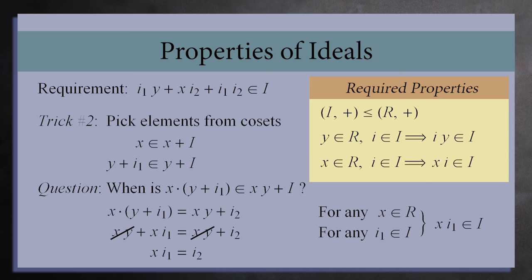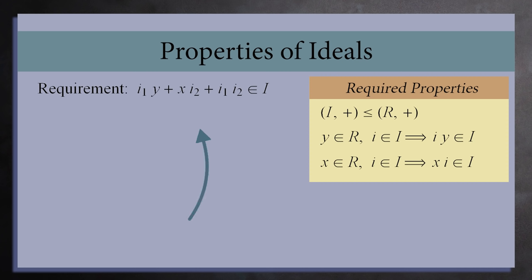Believe it or not, this is enough. If we return to our earlier work, we wanted to show that this expression was an element of the ideal. We have just shown for coset multiplication to work, the first and second terms must be in I.